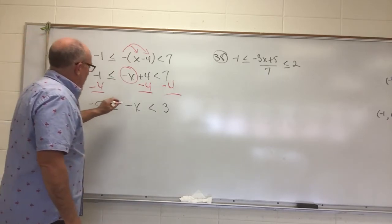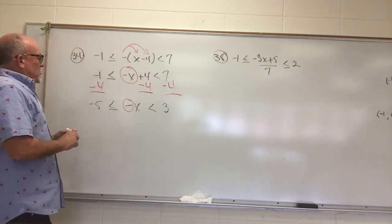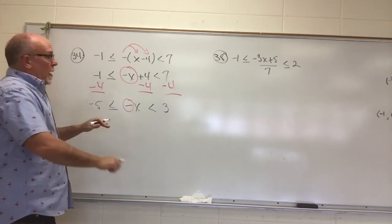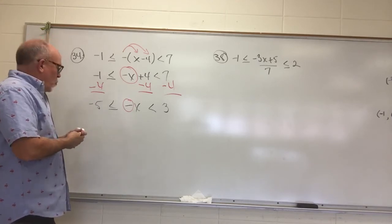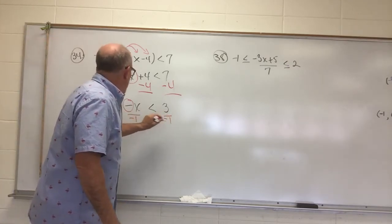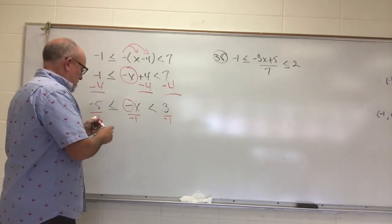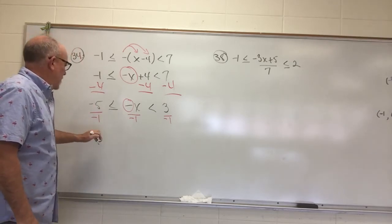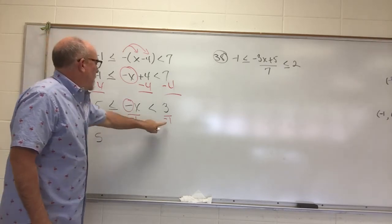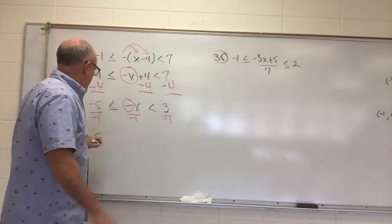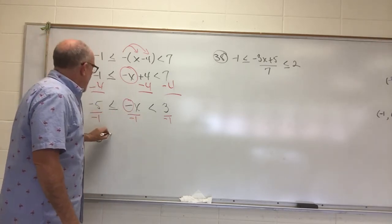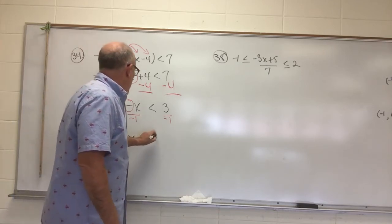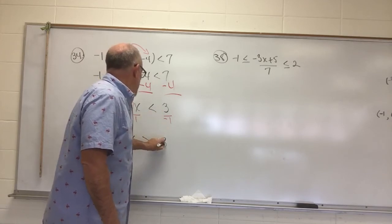The only other thing bothering us now is this negative sign in front of the x. So I need to multiply or divide all the way through by negative 1. So however you want to do it, this will be the easiest. Negative divided by negative is a positive 5. Because we're dividing by negative or multiplying by negative 1, the inequality is going to have to reverse both of them. And 3 divided by negative 1 is negative 3.